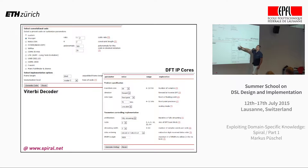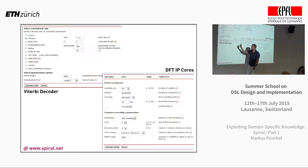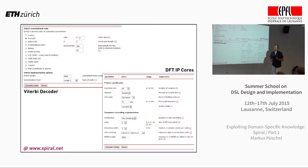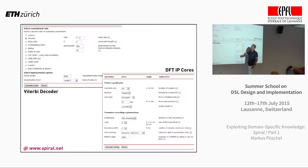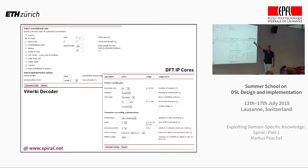Here are two generators I will not talk about much. Here's a generator for a Viterbi decoder. You just set what kind of code you're interested in, click a button, wait, and you get this crazy-looking code that is very fast. That's a very popular generator, actually. All major communication companies have accessed this site — we keep track of this.